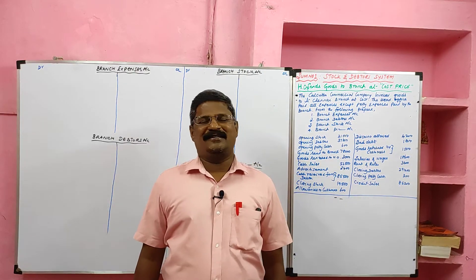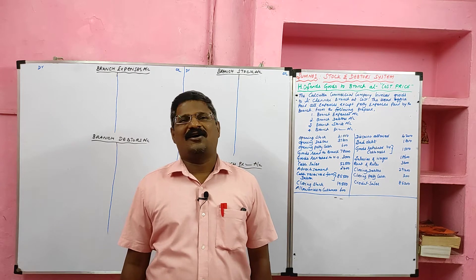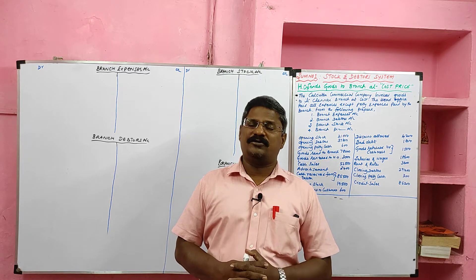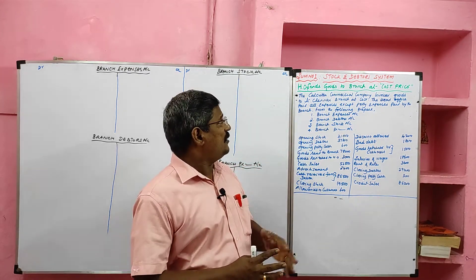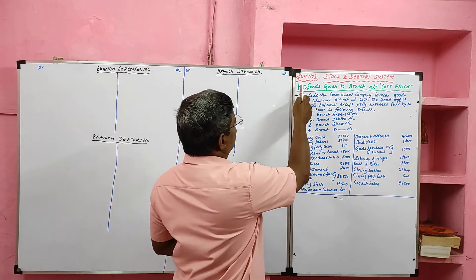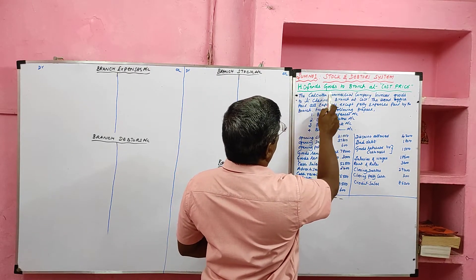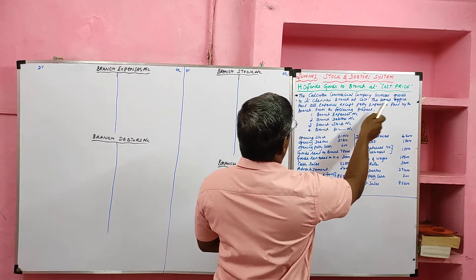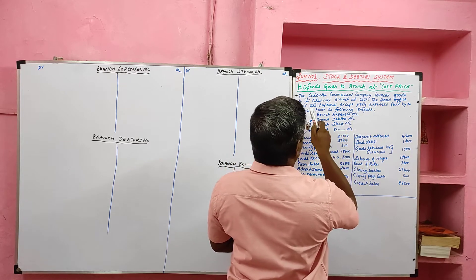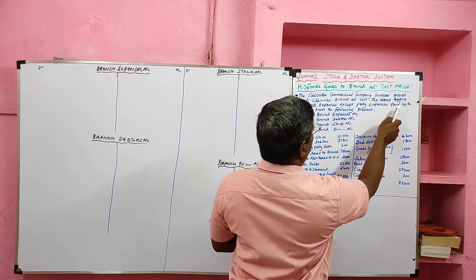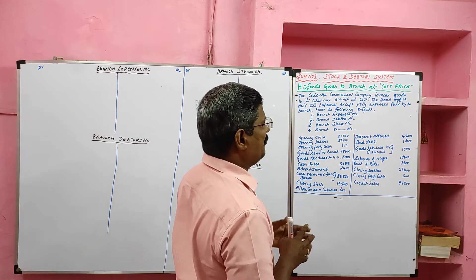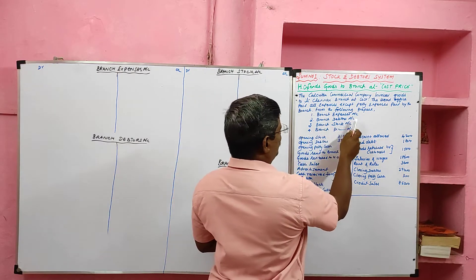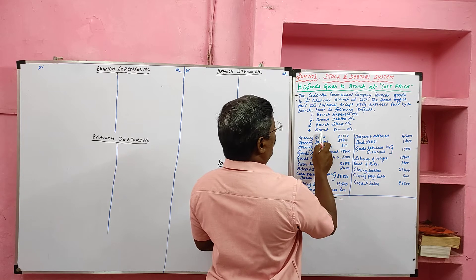Students, we are learning Branch Accounts. In Branch Accounts we are learning the Stock and Debt system. Here there are two situations. The first situation: the head office sends goods to its branch at cost price. We are going to solve the first problem. Look at the board — Sum number one: Stock and Debt System. Head office sends goods to its branch at cost price. The Calcutta Commercial Company invoiced goods to its Chennai branch at cost. The head office paid all expenses except petty expenses paid by the branch.